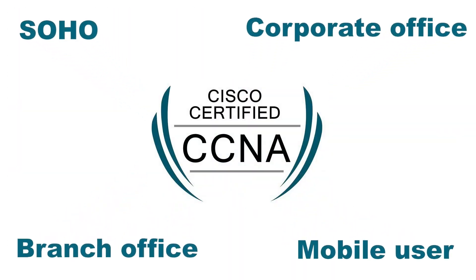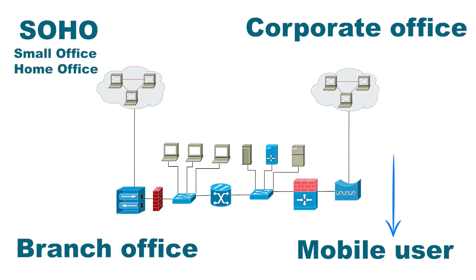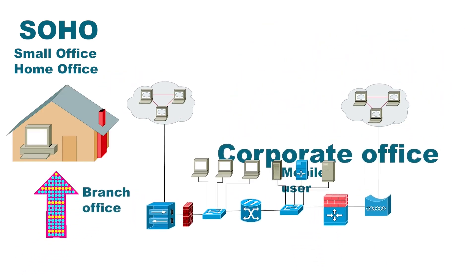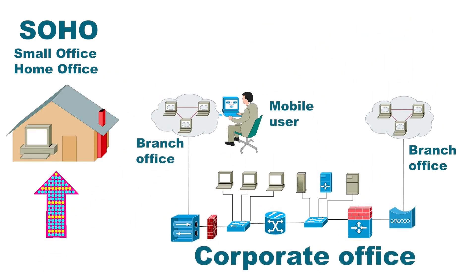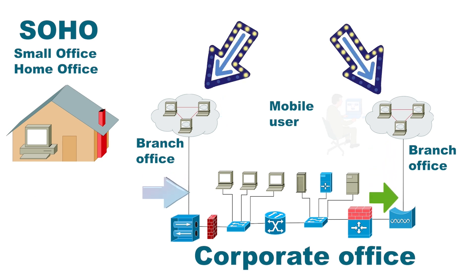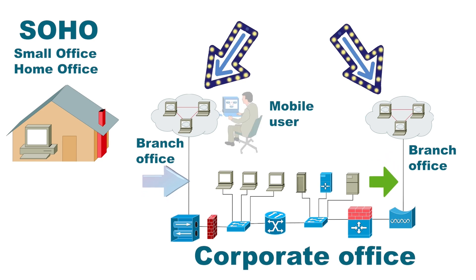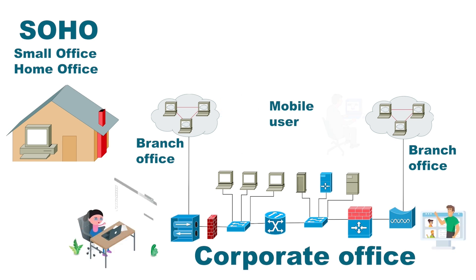The CCNA course uses four terms to describe various parts of a WAN network: SOHO, branch office, mobile user, and corporate office. SOHO is a standalone LAN network, usually installed and used for personal use, and it is not part of any other network. A branch office is also a LAN network, but it is part of a network connected through WAN connections. A mobile user works in more than one branch office. A corporate office is the primary LAN network, where the management board of the company works.